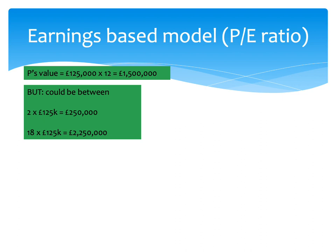That average figure can be quite misleading, because the PE ratio for similar companies actually ranged quite widely. If we were more like a company with a PE of 2, our company would only be worth £250,000. At the top end, with a PE multiple of 18, we'd be worth £2.25 million. So it's not always clear where we fall within that range.